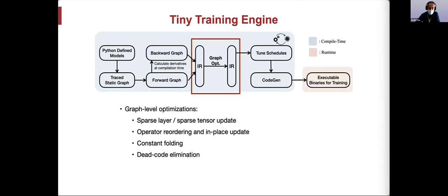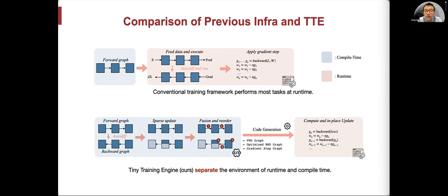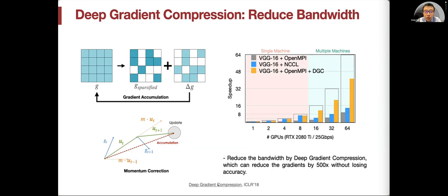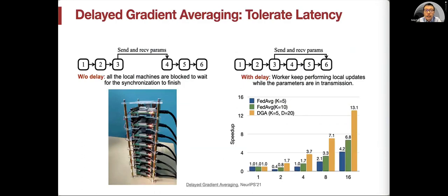Given the limited amount of time, I will summarize the comparison of TTE and compare our previous infrastructure, where we basically move a lot of optimizations into compile time and supported sparse layer and sparse tensor update. Beyond that, we also perform multi-device federated learning by reducing bandwidth with deep gradient compression, where we sparsify the gradient and accumulate the gradient. If they are not updated, it can reduce the bandwidth by 100 times and delay the gradient averaging that can tolerate long latency rather than having to wait. We set up a Raspberry Pi farm to measure the real speedup.